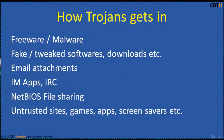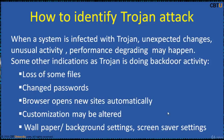Trojans do not propagate themselves and must be installed remotely or by tricking the user into installing them. Trojans can get into a system by various means. Hackers play intelligently and try all means to go unnoticed. However, when a system is infected with a Trojan, unexpected changes, unusual activity, and performance degradation may occur. Other indicators of backdoor activity include loss of files, changed passwords, browser opening new sites automatically, and altered customizations such as wallpaper, background settings, and screensaver settings being changed.